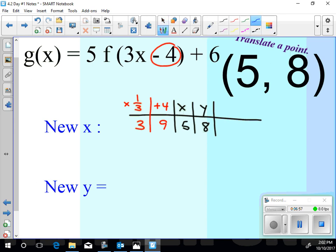Okay, my y value. My y value, I'm going to multiply by 5 first. And then I'm going to add 6. So I get 40 and I get 46. So my new points, my new x and my new y, 5, 8 transformed into 3, 46. You with me so far? Okay, let's try another one. We're just going to change the transformations.